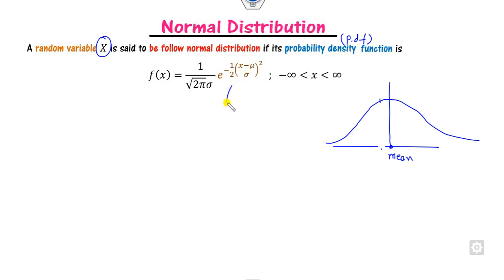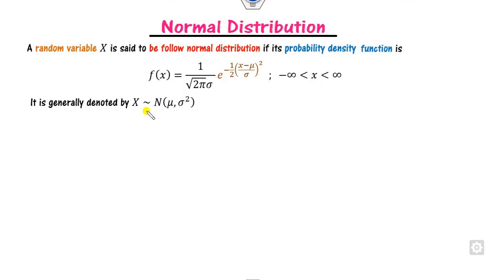How many unknown parameters are there in this function? There are two unknown parameters: one is mu and the second is sigma squared. This distribution is denoted as x follows the normal distribution with parameters mu and sigma squared.